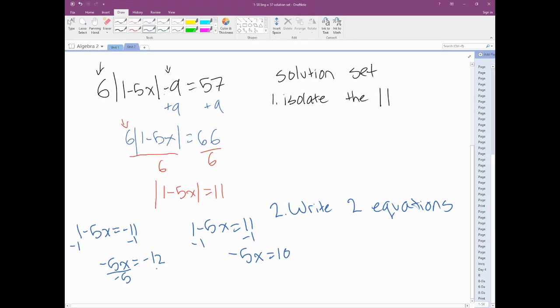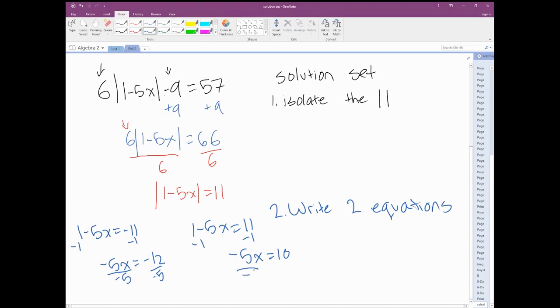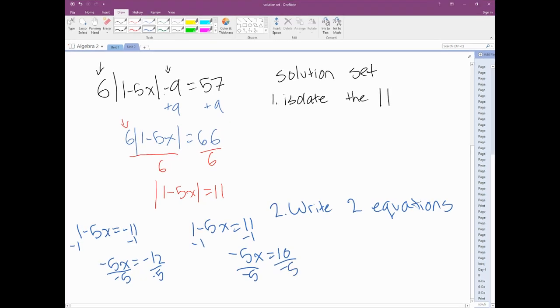Divide by negative 5, and we end up with x equals 12 over 5. We can't reduce this at all, so that's just going to be a weird number. And then x equals negative 2.